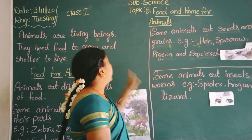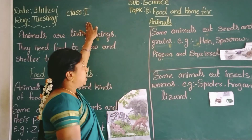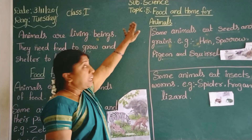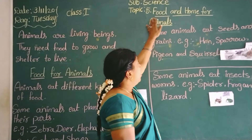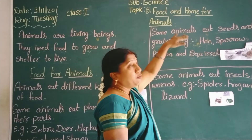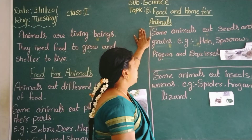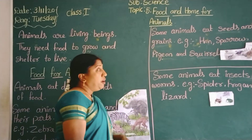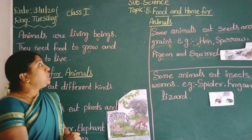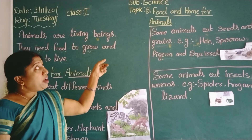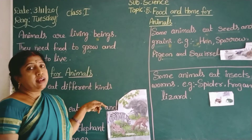Hi children, welcome to first standard subject science, topic lesson number 5: food and home for animals. Today I am going to teach food and home for animals.